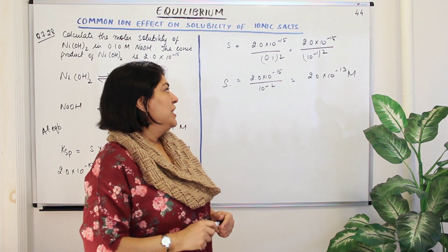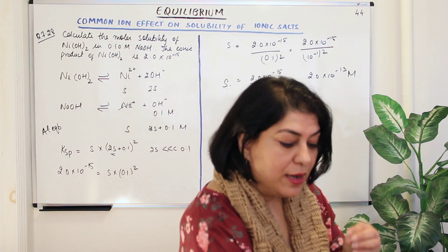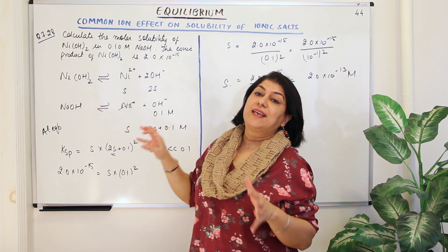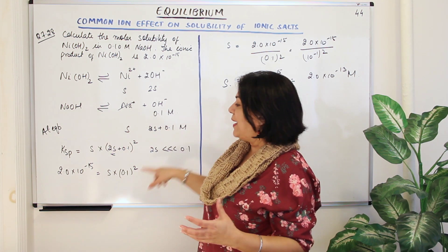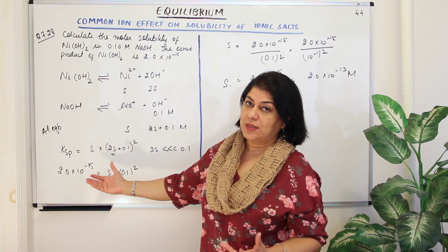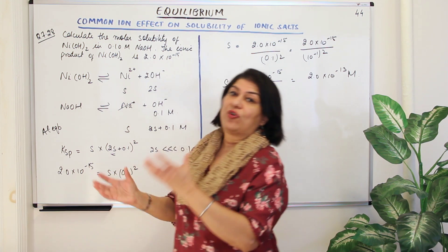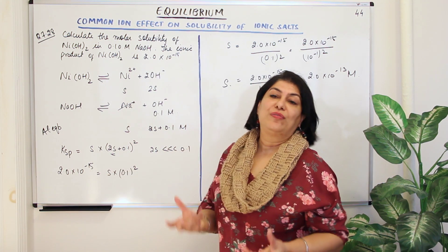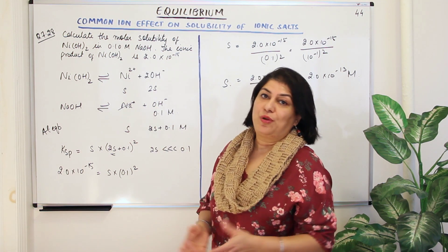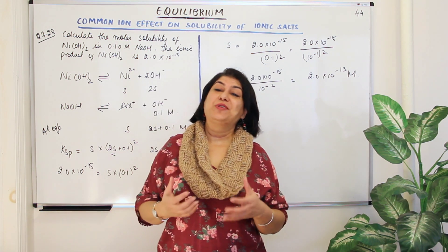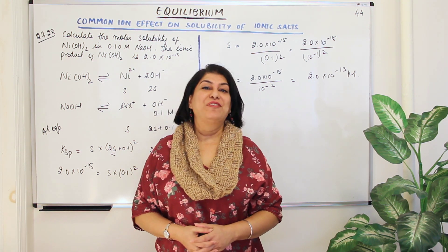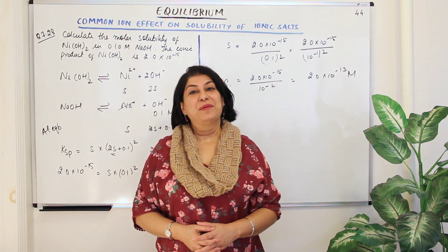Whenever you are handling a common ion, you need to see how the concentration of that ion is altered, then substitute that altered value into the Ksp expression. Ksp is constant, so you put it in and find the value of S, which gives you the solubility of the salt. With that, I come to the end of this chapter. If you found it helpful, please give it a thumbs up, subscribe to my channel, and keep returning for more videos on chemistry. Thank you for watching and bye-bye for now.